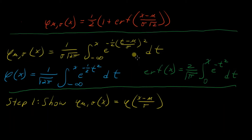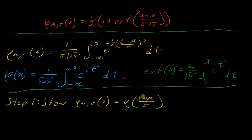We're going to do this in two steps. First, we're going to start out by proving that if you have the general CDF and you just enter in x, that's the same as having the simpler standard normal version where you plug in the entire z-score, which has x, mu, and sigma in it. That's a little intuitive anyway. So that's what we're going to start with.